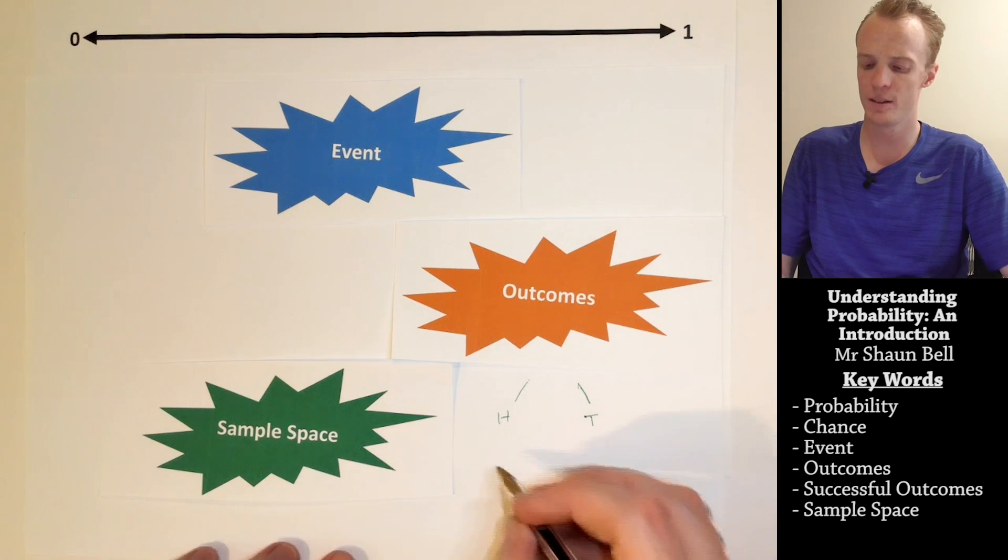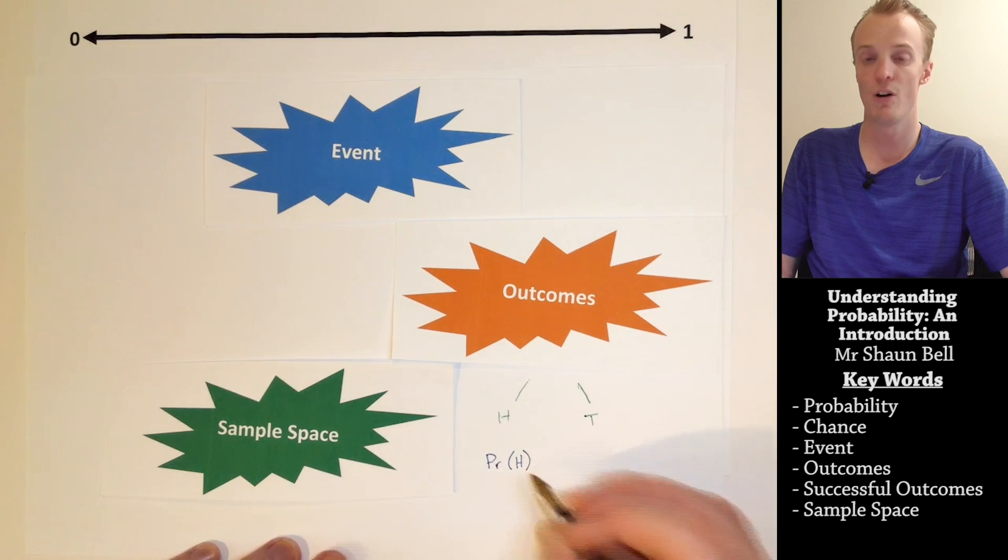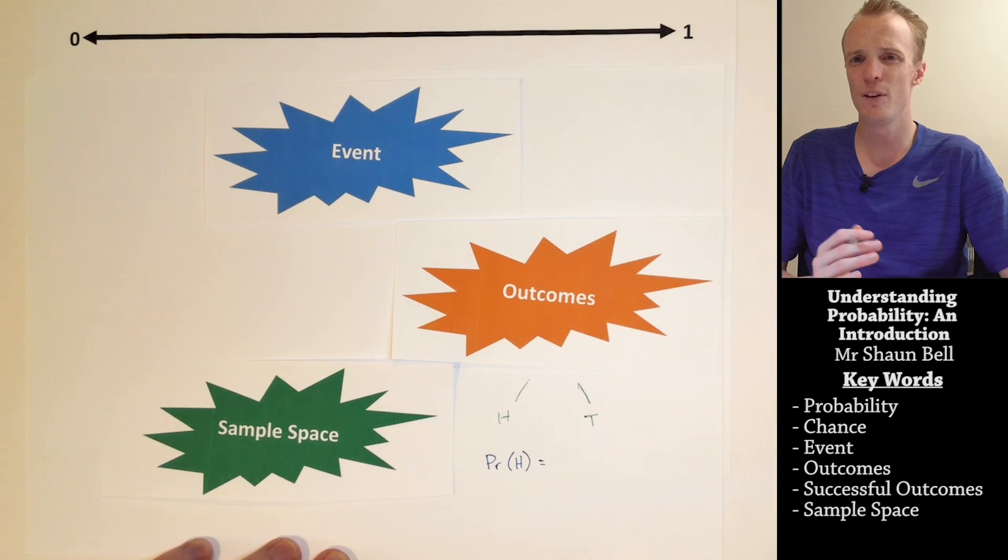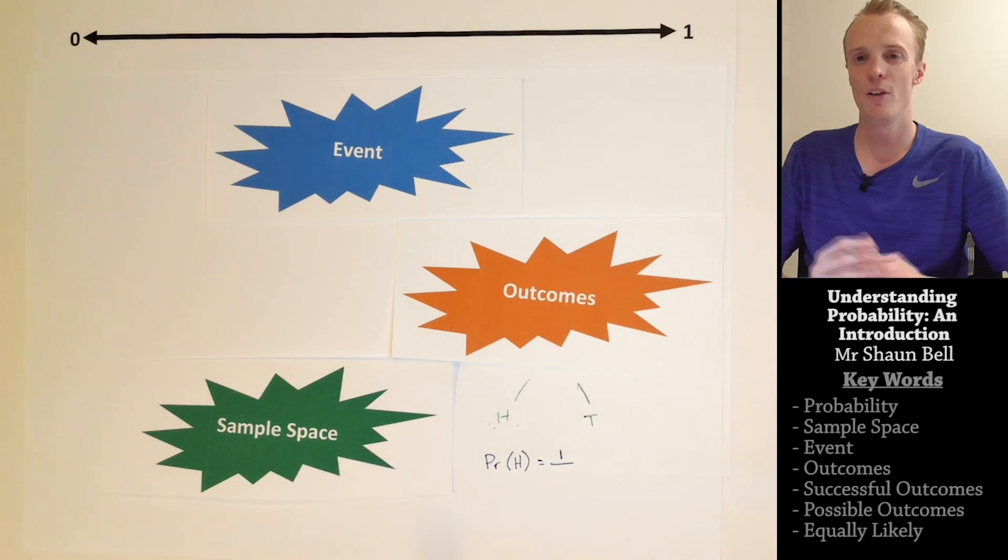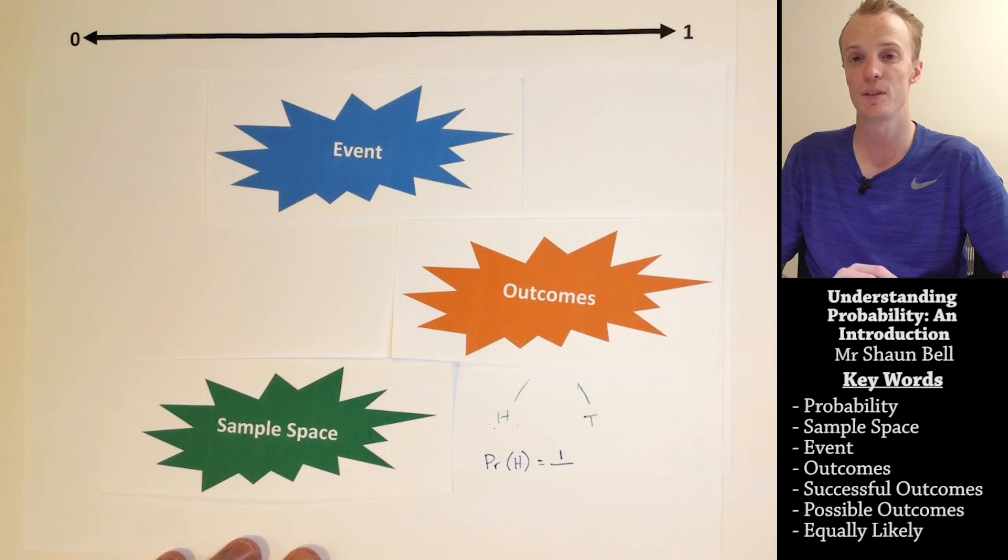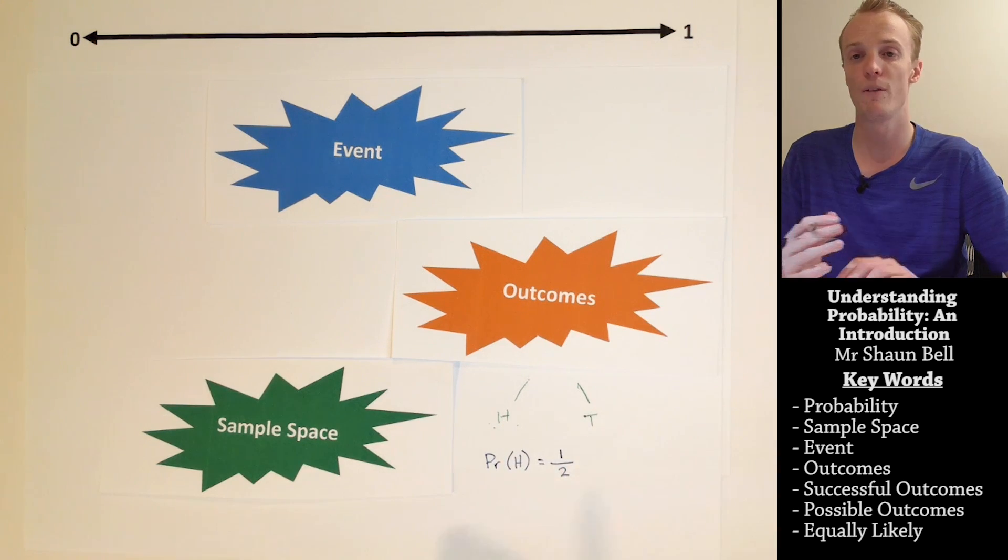Knowing our sample space helps us identify what the probability of a successful outcome is. For example, if we wanted to know what the probability of flipping a head on a coin is, we first look at how many successful outcomes do we have in our sample space. Here, it's nice and simple. We've only got the one, and we put this on top of our fraction. On the bottom of our fraction, we need to identify how many different possible outcomes there are in our sample space. Here, there are two. So that two becomes the bottom of our fraction.